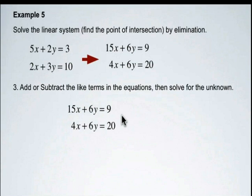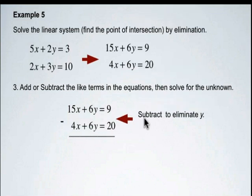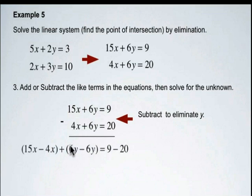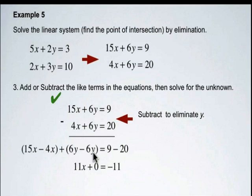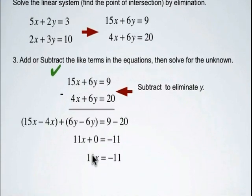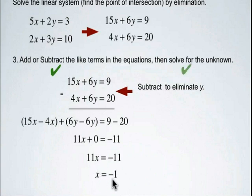We're going to add or subtract to solve for our unknown. Since we have the same y coefficient — positive 6 and positive 6 — we subtract. So 15x minus 4x plus 6y minus 6y equals 9 minus 20. That gives 11x, the y terms cancel to 0, and 9 minus 20 is negative 11. So 11x equals negative 11, and dividing both sides by 11 gives x equals negative 1.